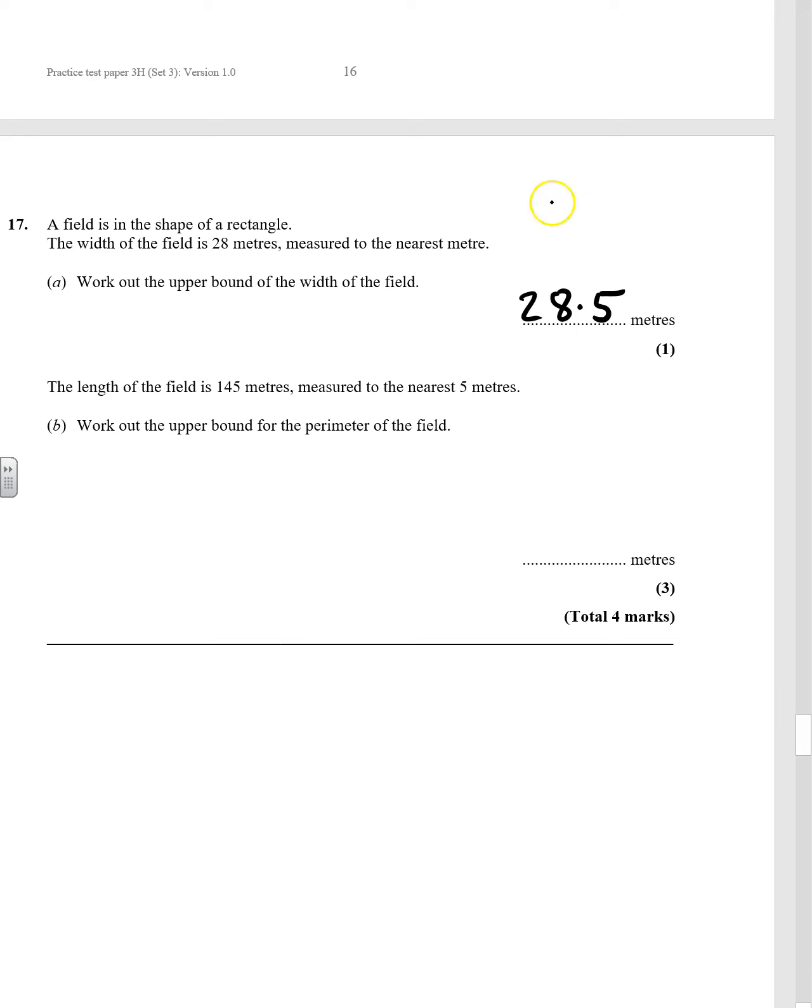OK, so we can do a little drawing. So we've got 28.5, and because this is to the nearest 5, it will be 147.5. If it's any bigger than that, it will go up to 150.